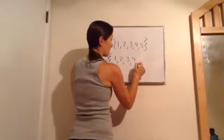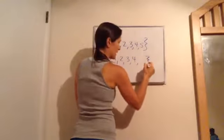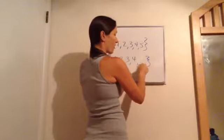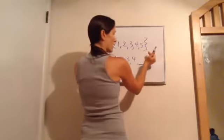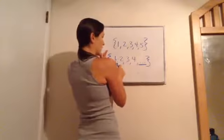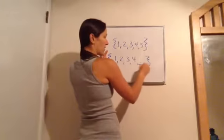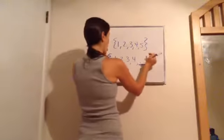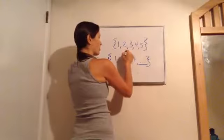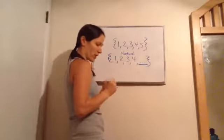And then when I put dot dot dot but then end the set, it basically means it keeps going on forever. But this is included in natural numbers, meaning from one to four and then the rest of the numbers are included in natural numbers. So this is a set of natural numbers.